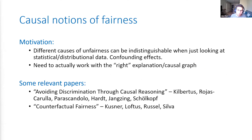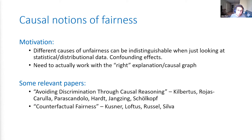I also want to mention causal notions of fairness. In the interest of time I'm not going to go through them in detail, but a key motivation is that different causes of unfairness can be really indistinguishable from each other when you're just looking at statistical and distributional data, because there can be a lot of confounding effects. To understand those issues, you need to work with the right causal graph. Two relevant papers that really started this area are 'Avoiding Discrimination Through Causal Reasoning' by Kilbertus et al. and 'Counterfactual Fairness' by Kusner, Loftus, Russell, and Silva.